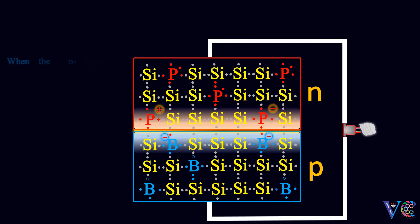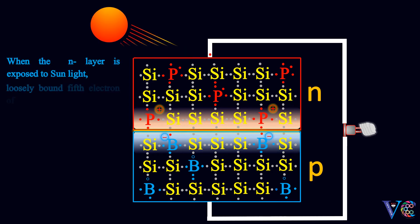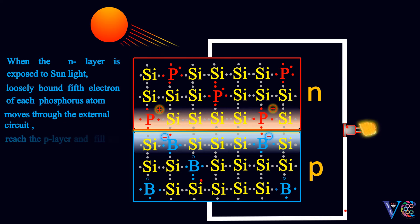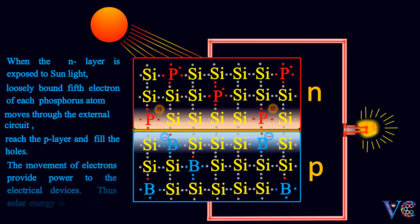When the N layer is exposed to sunlight, loosely bound fifth electron of each phosphorus atom moves through the external circuit. The movement of electrons provide power to the electrical devices. Thus, solar energy is converted to electrical energy.